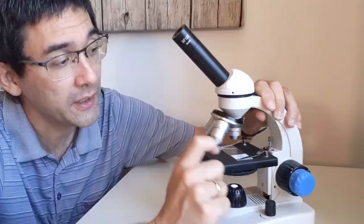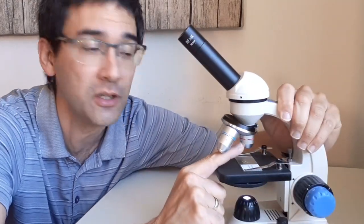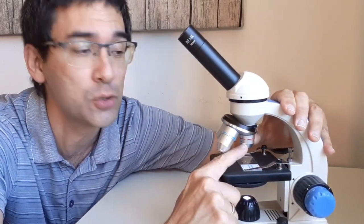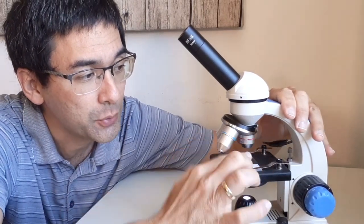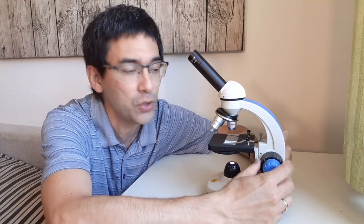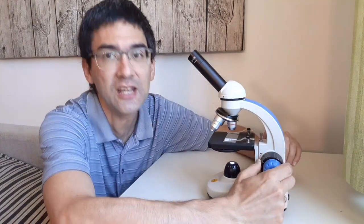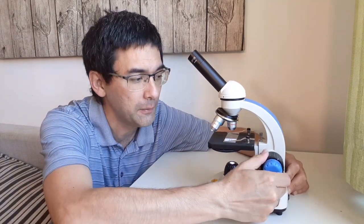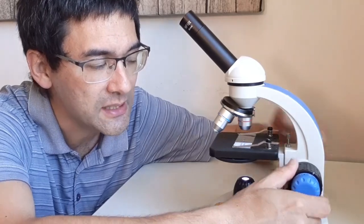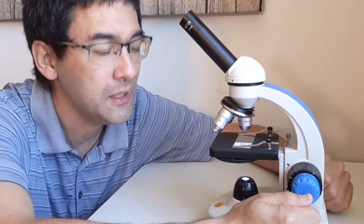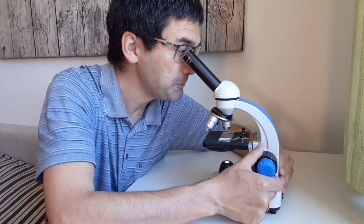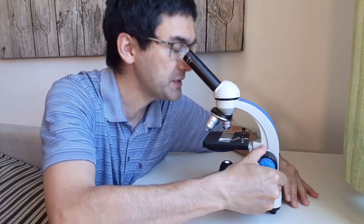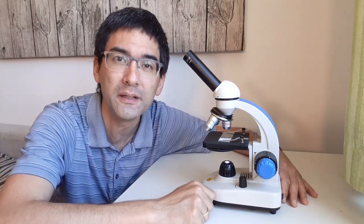So I'm going to give you now the tip on how to do it properly. Number one, you have to make sure that the smallest objective, that's this one here, it has usually a red ring, it's the four times objective. You have to make sure that this one is in position here. And then what you do is you take the coarse focus and you raise the stage all the way to the top. You don't have to worry about crashing the objective into the slide because it doesn't go up further.